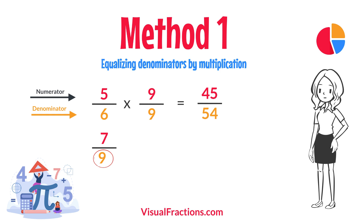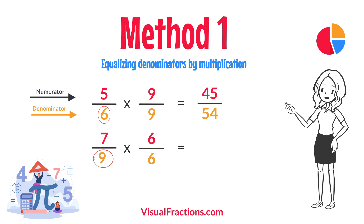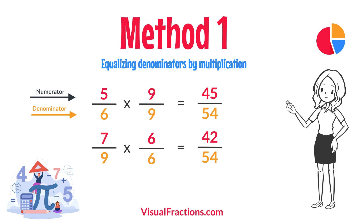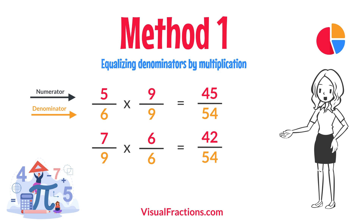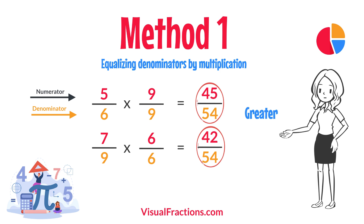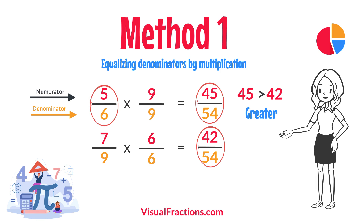For 7 ninths, multiply both the numerator and the denominator by 6 — the denominator of 5 sixths. This results in 42 54ths. Now, with both fractions expressed with a denominator of 54, we can easily compare them. Comparing these, 45 54ths is greater than 42 54ths, so 5 sixths is the larger fraction.